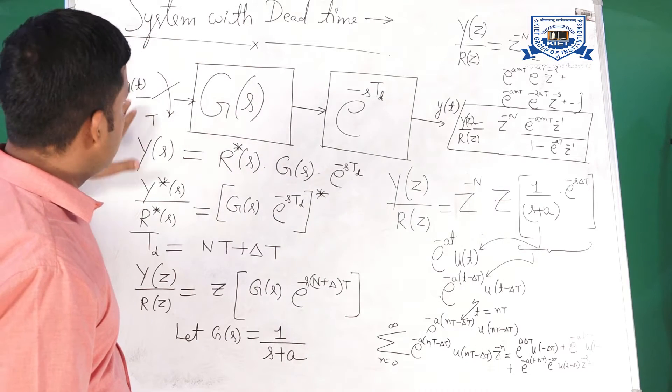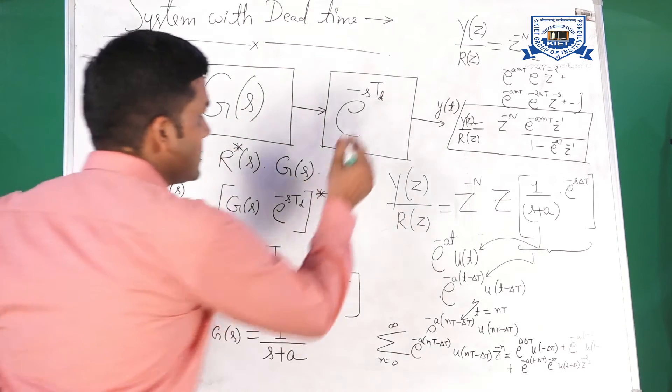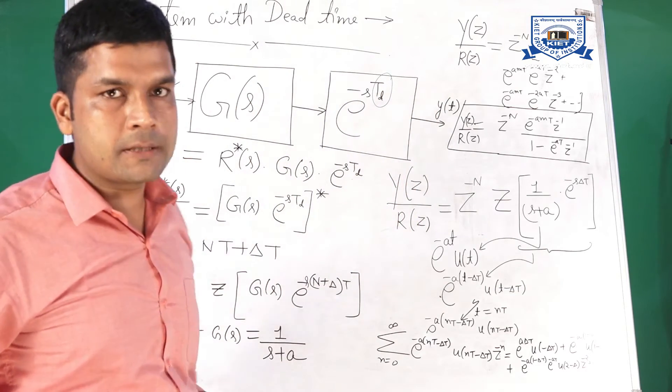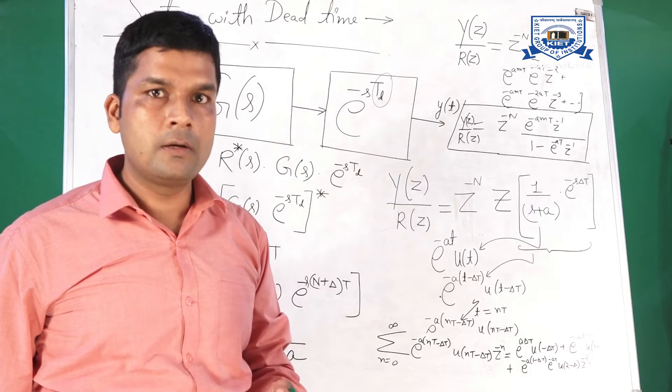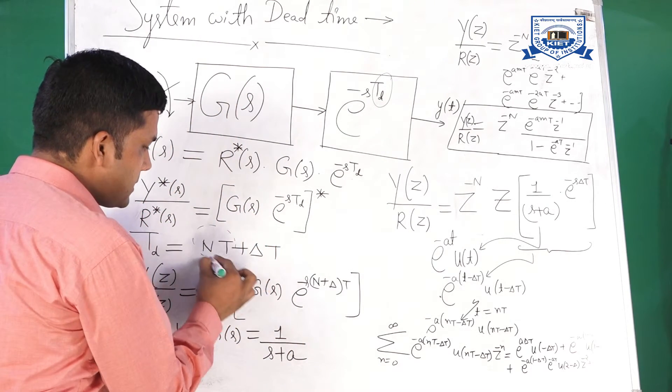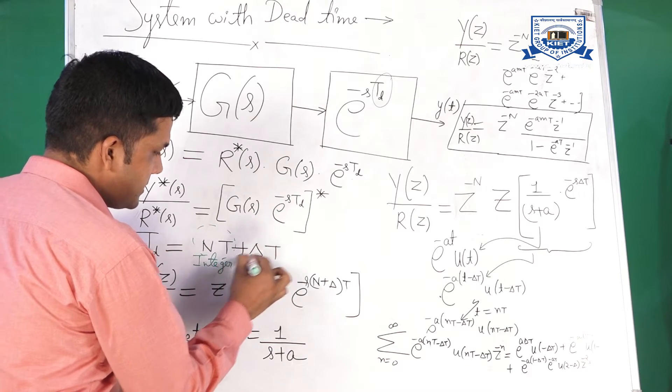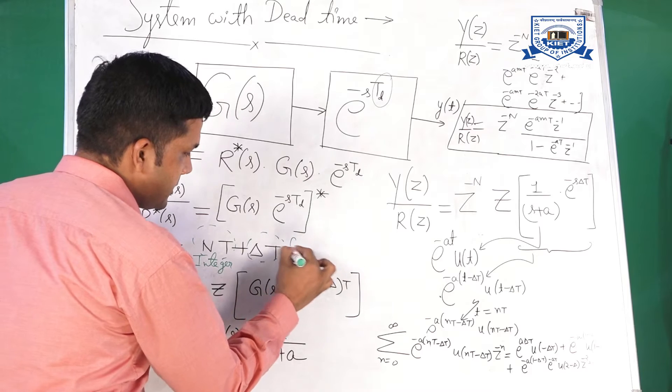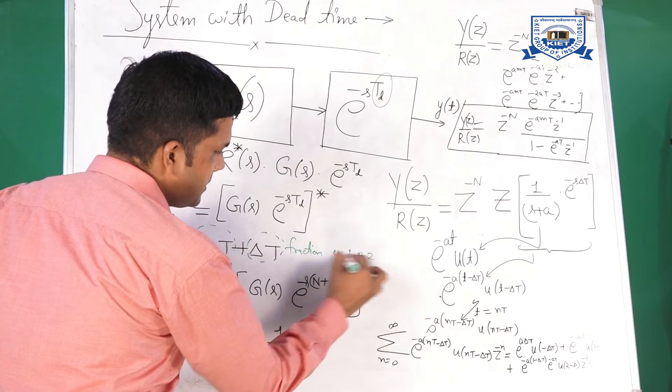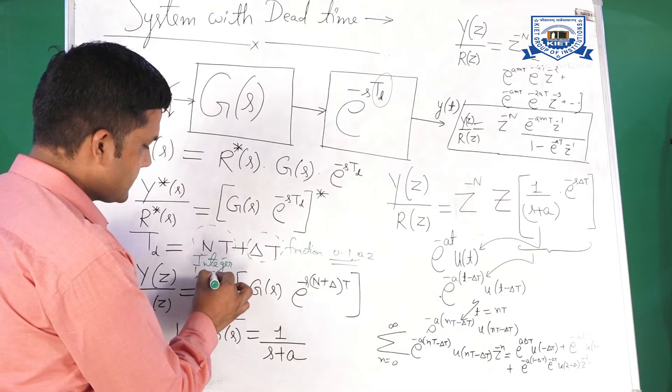In this system, this is the sampler, this is the system function, and this is the transportation delay, td. Transportation delay may be integer or may be fractional. This is the integer part and this is the fractional part. Fractional means it may be 0.1, 0.2, any value. And integer value is 1, 2, 3, 4, 5, 6, like that.